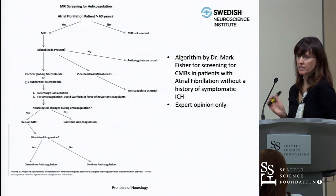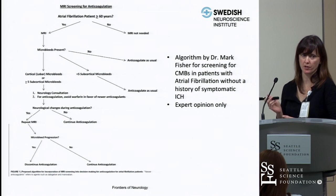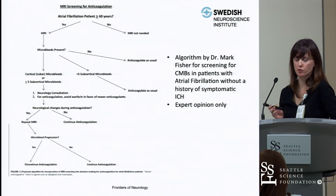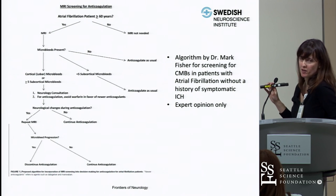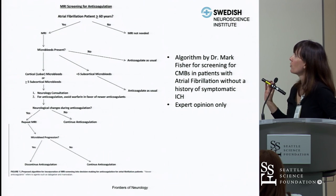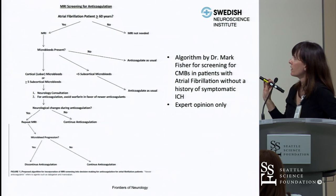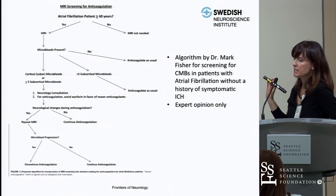This algorithm is not for patients with symptomatic hemorrhage, but for high-risk AFib patients with high CHADS-2 scores. It advocates MRI screening before anticoagulation if patients are age 60 or older — if under 60, no screening is recommended. If no microbleeds are present, the patient should be anticoagulated as appropriate with any suitable anticoagulant.